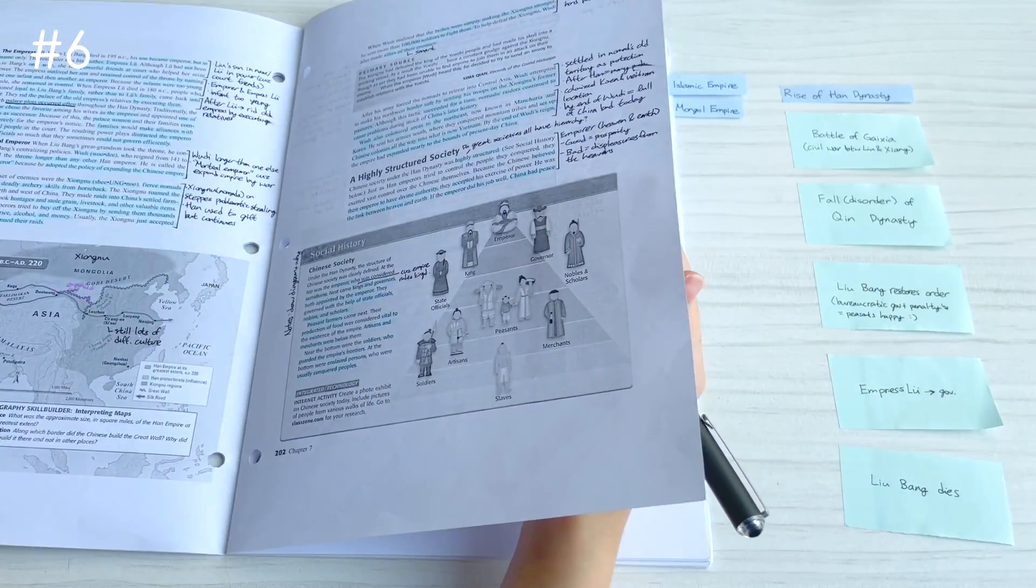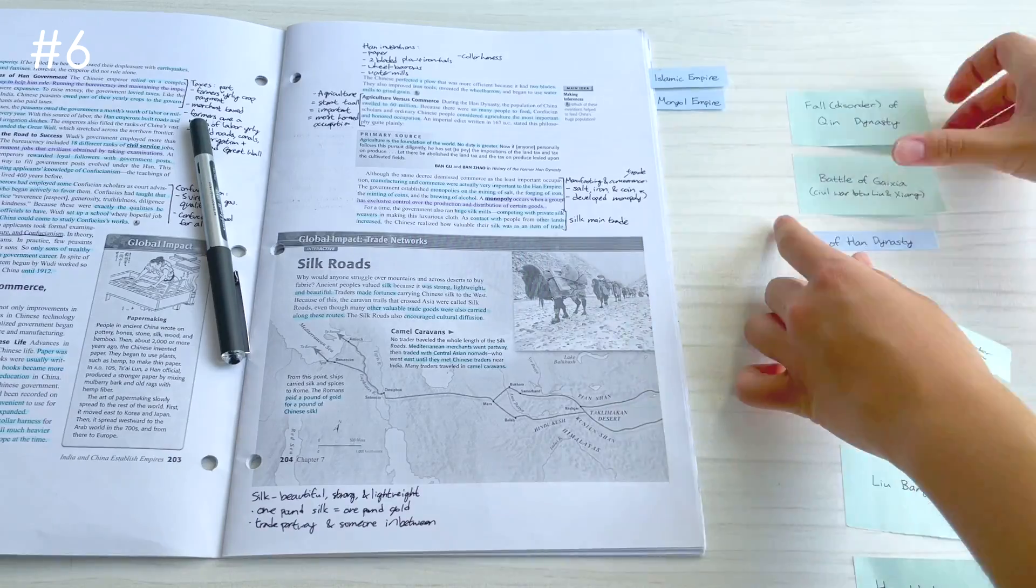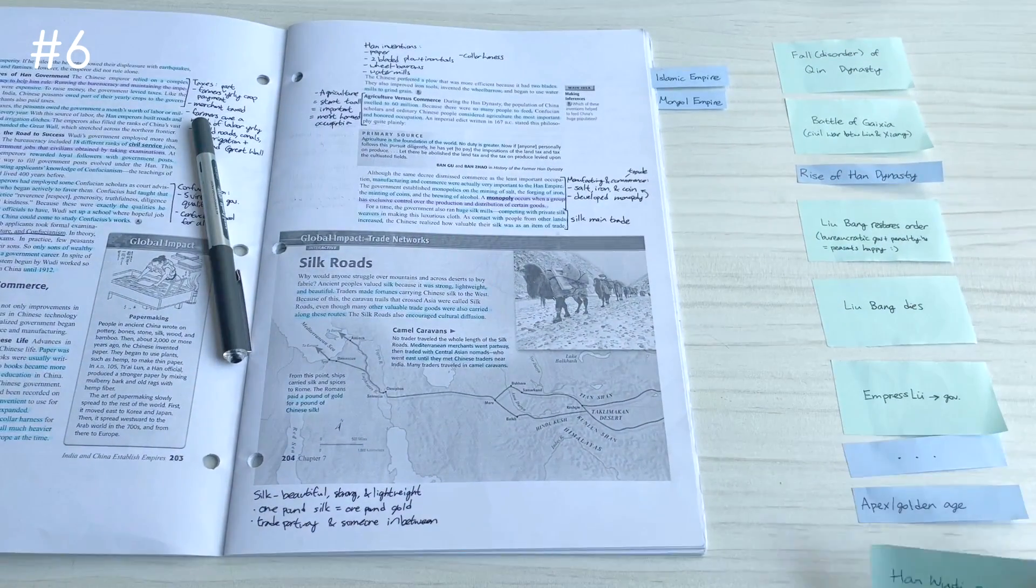Timelines are super annoying when you have new information to add in. Sticky notes allow you to move them around, so next time make a timeline with sticky notes instead of paper.